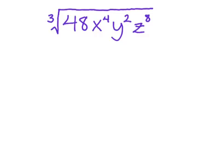In this video I'm going to take you step by step through the process of simplifying a radical when it's something other than just a square root. Here we have a cube root, specifically the cube root of 48x to the fourth y squared z to the eighth. Since this is a cube root, to simplify parts we want to see if we can rewrite each of these things using 3 as an exponent, because the cube root of something cubed cancels out and simplifies very nicely for us.